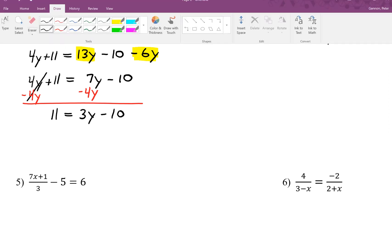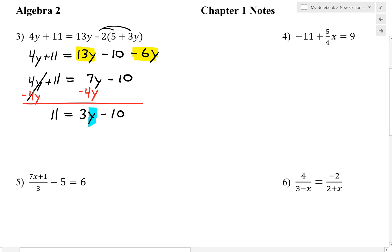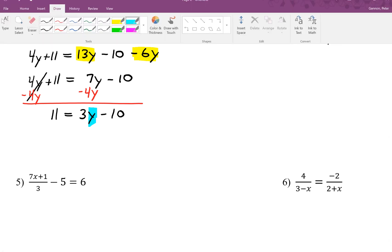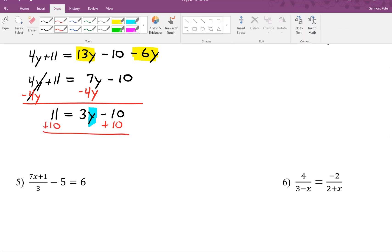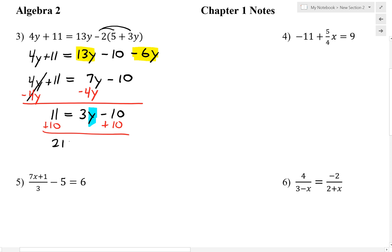We're at that point where we need to isolate y. In order to do that, we're going to start by adding 10 to both sides. 11 plus 10 is 21. Equal sign comes down, bring down the 3y, and those 10s cancel.